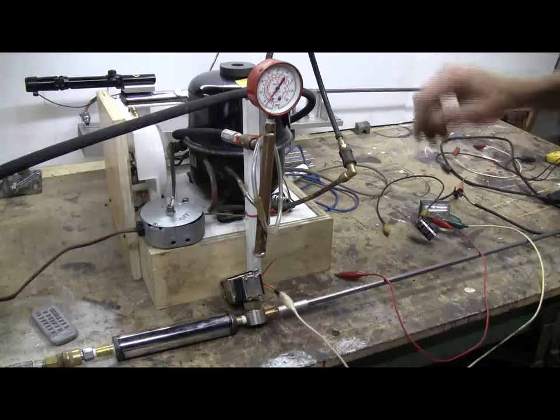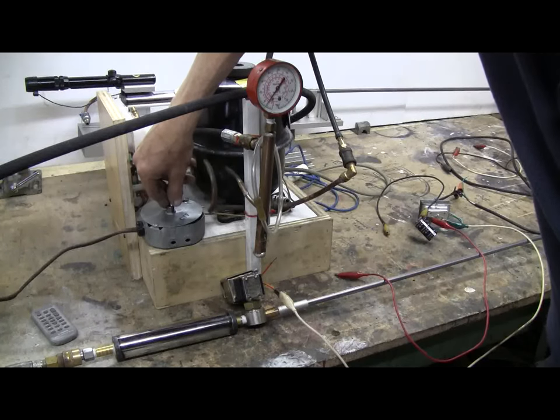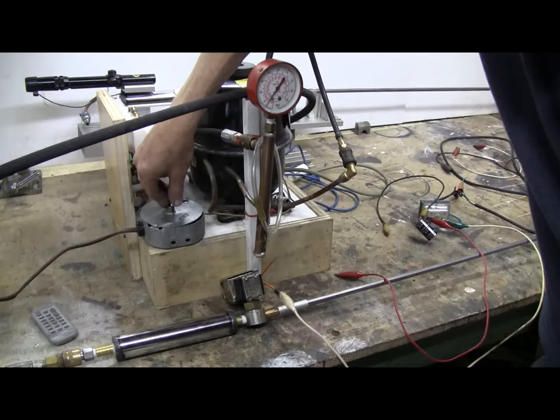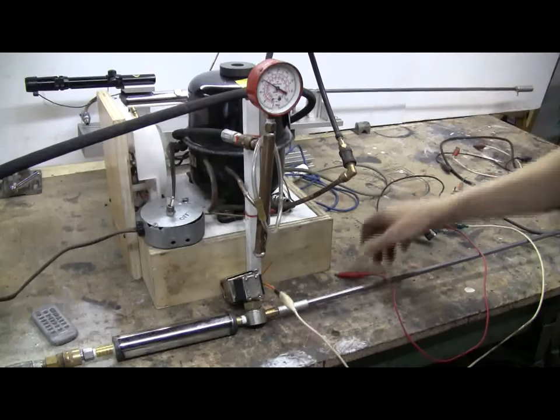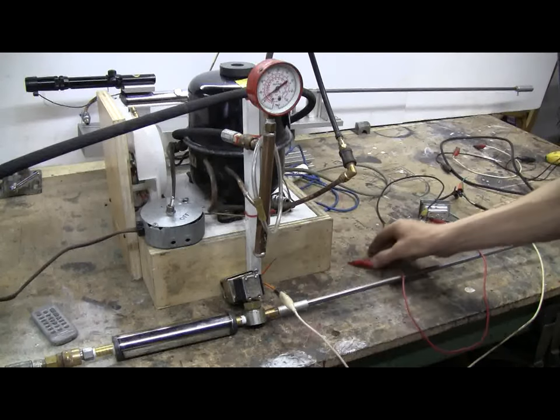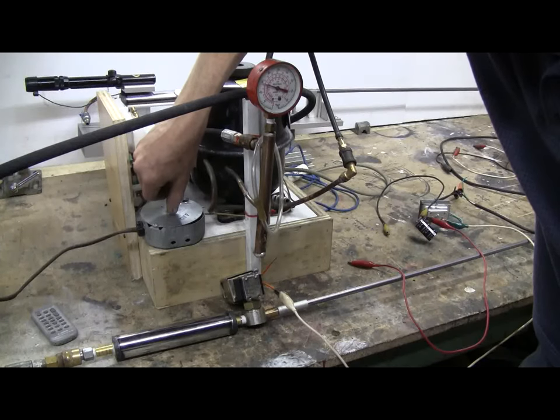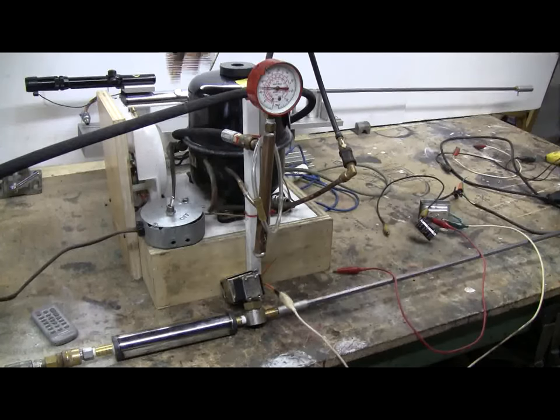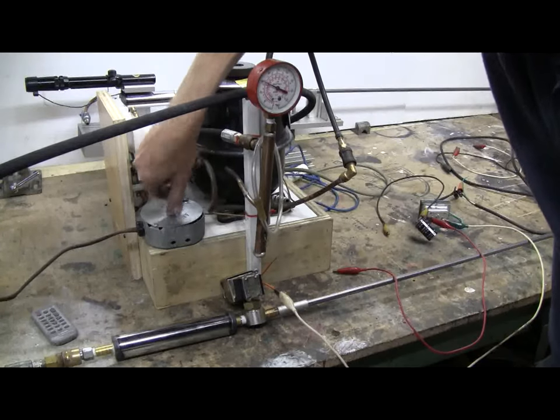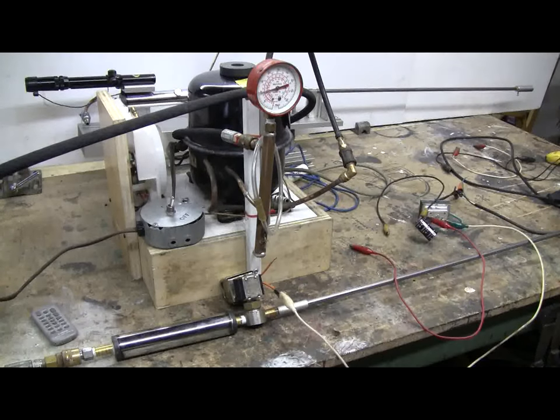Let's move on up to 150 psi and again attempt to trigger the valve using 24 volts AC. 150 psi, let's do it again. Gauge is past 150, fire. And a third time, 150, fire. Seems quite reliable so far.